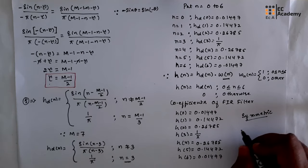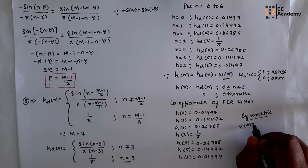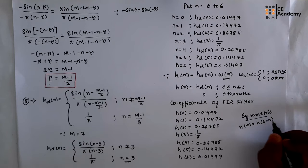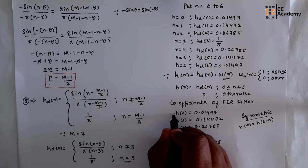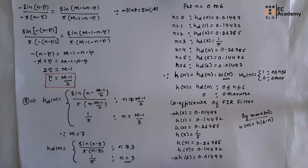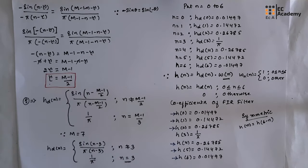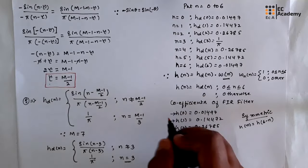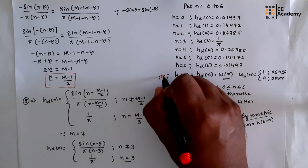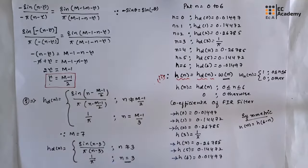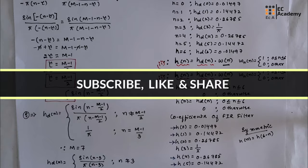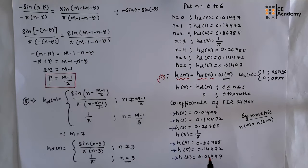Since the filter is symmetric, h(n) = h(6−n), meaning h(0) = h(6), h(1) = h(5), and h(2) = h(4). The two steps were: first find hd(n), then find h(n) — the filter coefficients. This completes the problem on FIR filter design using a rectangular window. Hope you have understood the topic. Thank you.